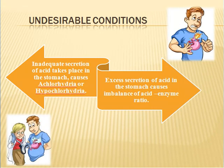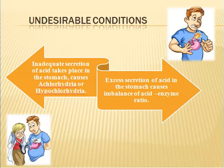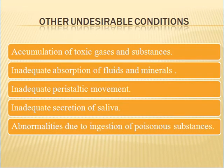Gastric and sometimes duodenal valves become sensitive, giving rise to acute pain. There may occur accumulation of toxic gases and substances. There may occur inadequate absorption of fluids and minerals from the large intestine, thereby causing diarrhea. There may occur insufficient peristaltic movement of the large intestine, thereby causing constipation, and inadequate secretion of saliva making food difficult to swallow. Abnormalities may also occur due to ingestion of poisonous substances accidentally or intentionally.